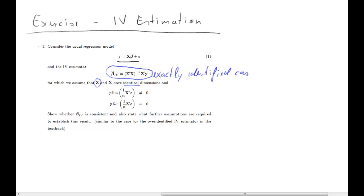The question here is whether this estimator is consistent or not. We have two extra bits of information: the probability limit of x prime epsilon, which turns out to be unequal to zero — this is the reason why we need instrumental variables estimation. And z prime epsilon is equal to zero, which is one of the conditions we impose on the instruments: they have to be uncorrelated to the error terms.